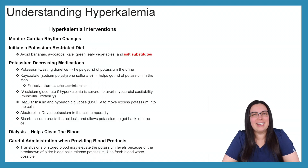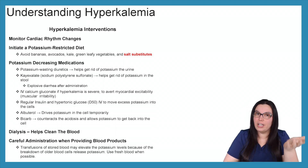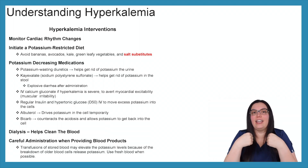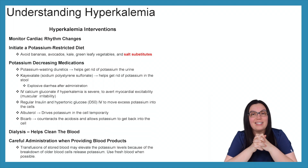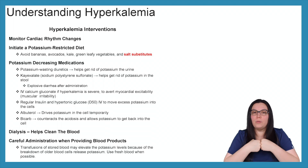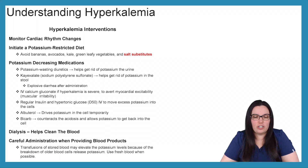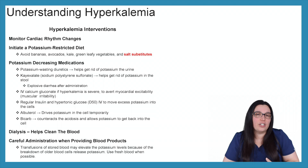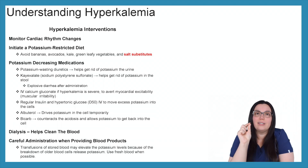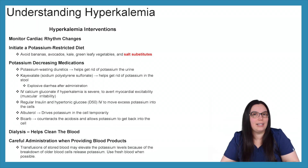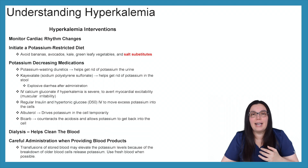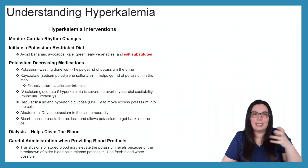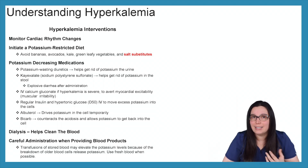Let's talk about hyperkalemic interventions. First, monitoring cardiac rhythm changes — hyperkalemia causes tight and contracted, so we watch our ECG because it's going to be hyperactive. We're going to initiate a potassium-restricted diet, avoiding potassium-rich foods such as bananas, avocado, kale, and green leafy vegetables. We especially want to avoid salt substitutes because they're very high in potassium. For potassium-decreasing medications, we can use potassium-wasting diuretics to help excrete excess potassium through the urine, including loop diuretics such as Lasix as well as thiazides.